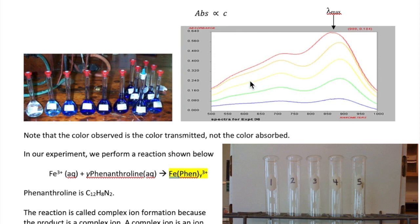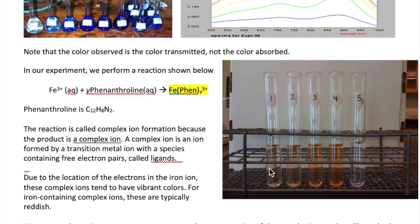Since we don't know exactly which wavelength the absorption is the strongest, what we're going to have to do is to scan that range of wavelength to find out what the lambda max is. Now, once we find the lambda max for our complex ion,